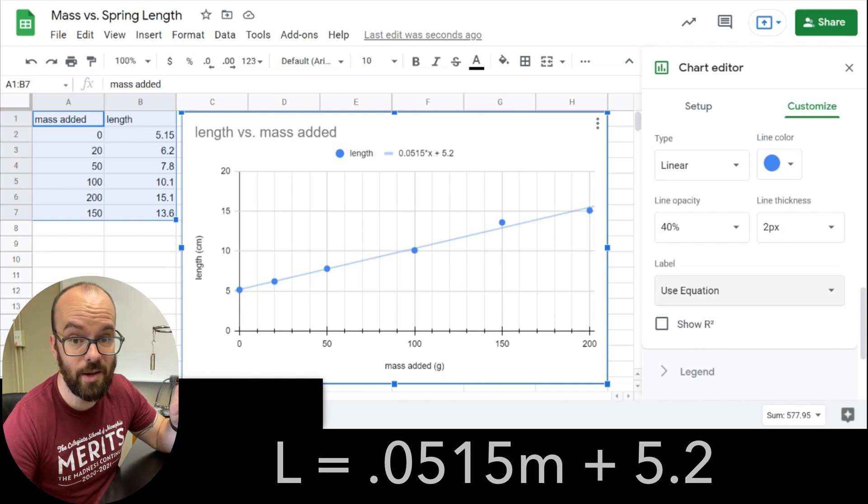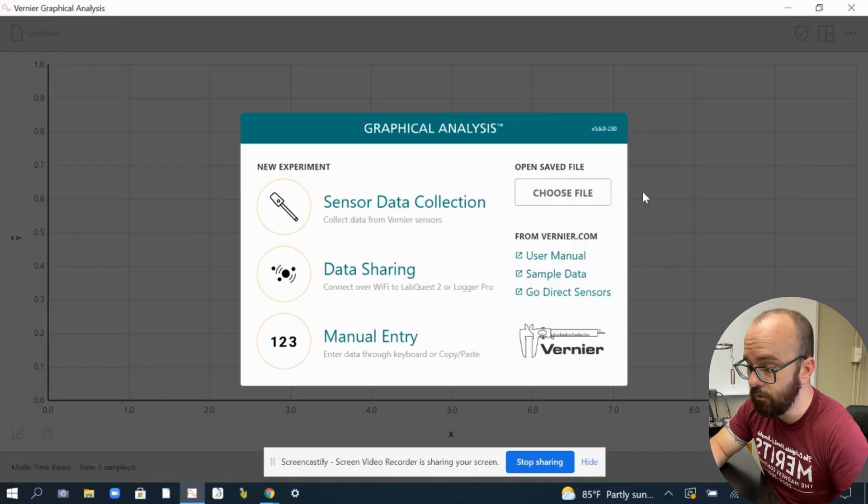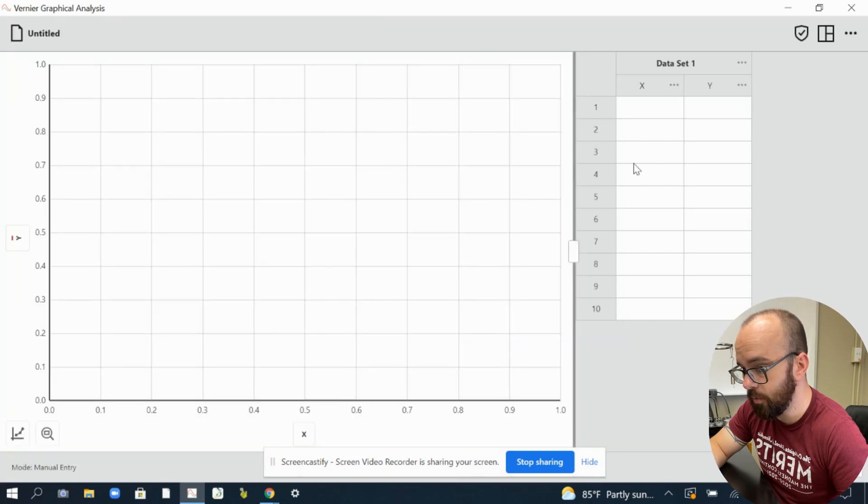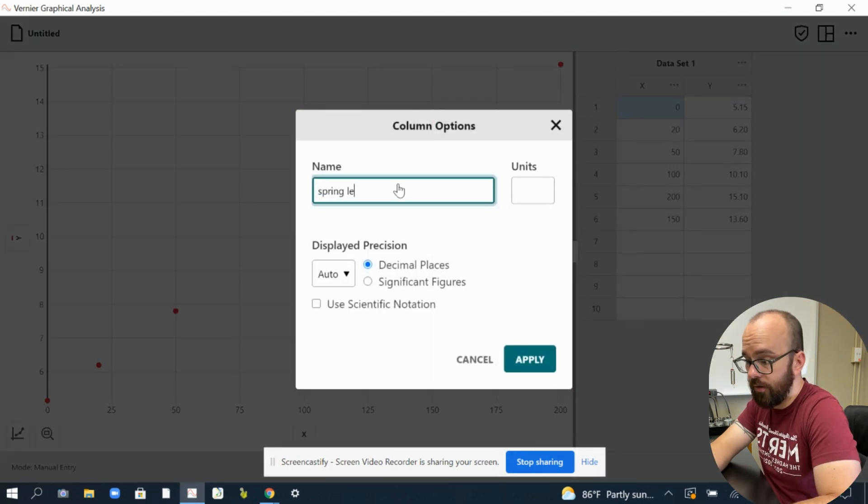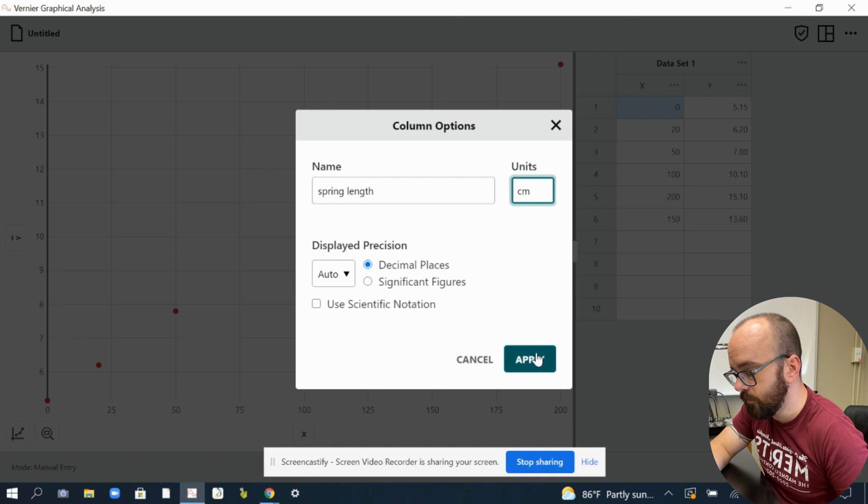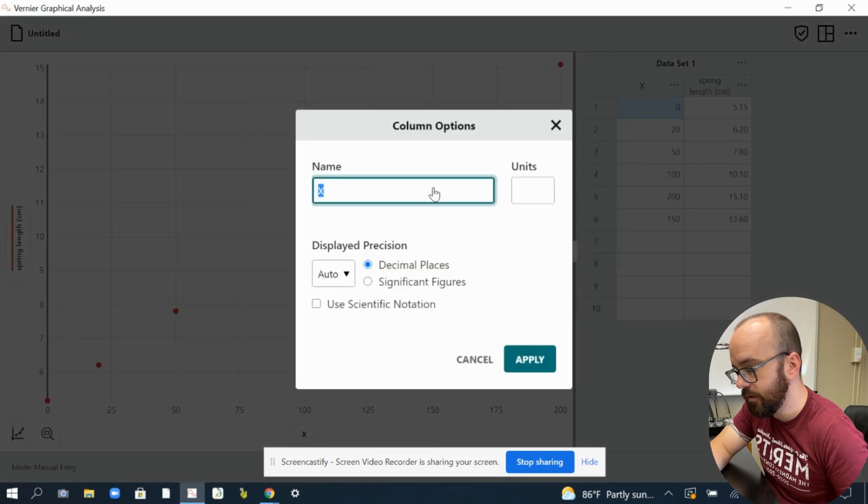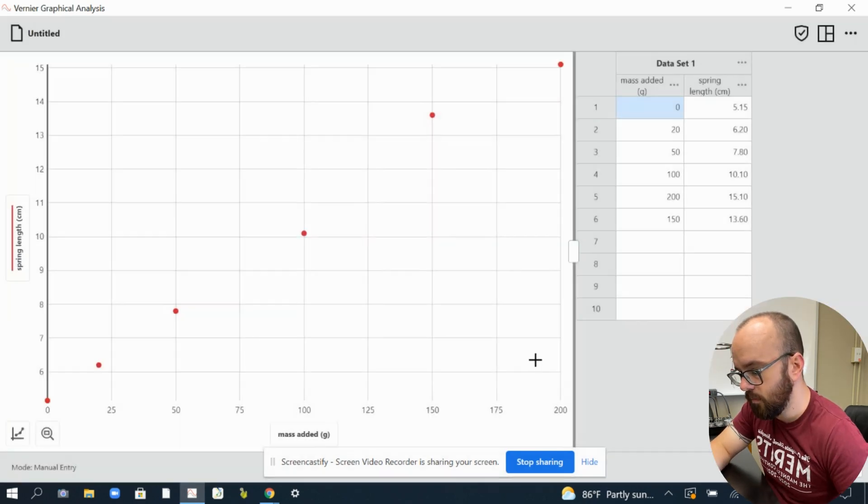So now I have the Vernier graphical analysis pulled up. If I was using a sensor to collect data, I would choose that option. I'm going to use manual entry because I'm just going to take data that I already measured and put it into here. And I'm going to change my column options. For my Y, I'm going to call this spring length, units of centimeters. And I'm going to do the same thing for my X values. Apply.